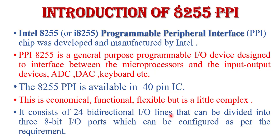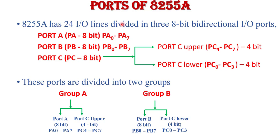8255 basically consists of 24 bidirectional I/O lines that can be divided into three 8-bit I/O ports, which can be configured as per requirement. The three ports are Port A, Port B, and Port C. Each port has 8 bits: Port A is denoted PA0 to PA7, Port B has PB0 to PB7, and Port C also has 8 bits but is divided into two parts — Port C Lower (PC0 to PC3, 4 bits) and Port C Upper (PC4 to PC7, 4 bits).